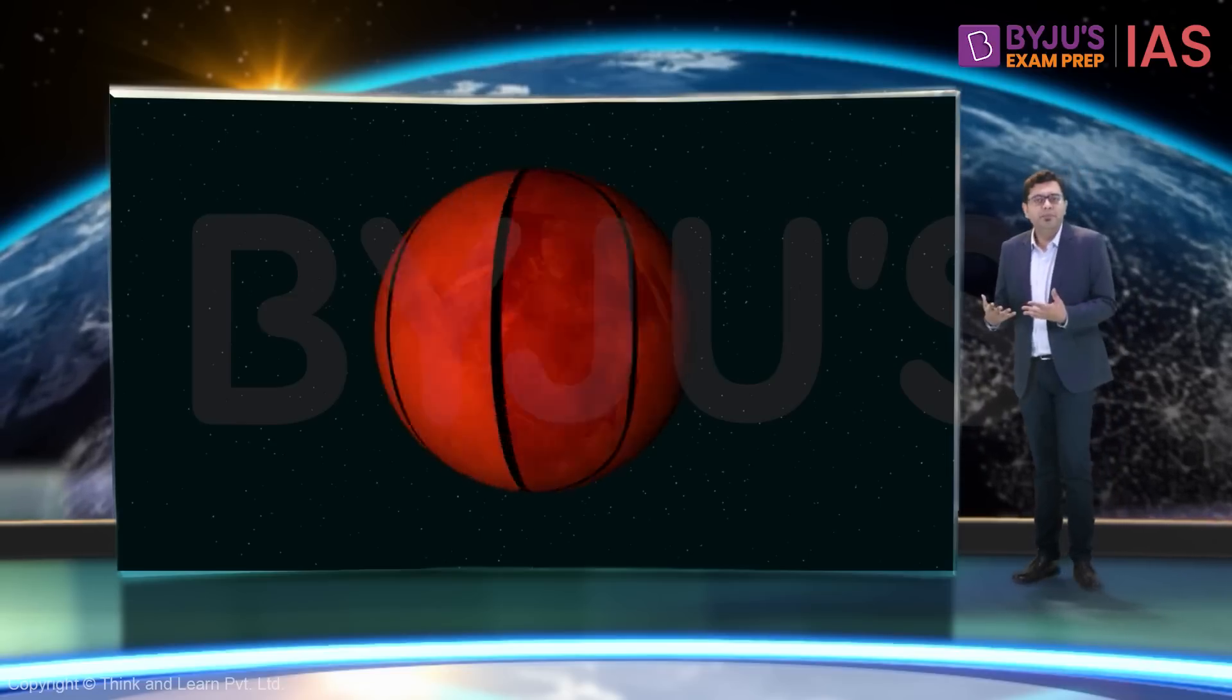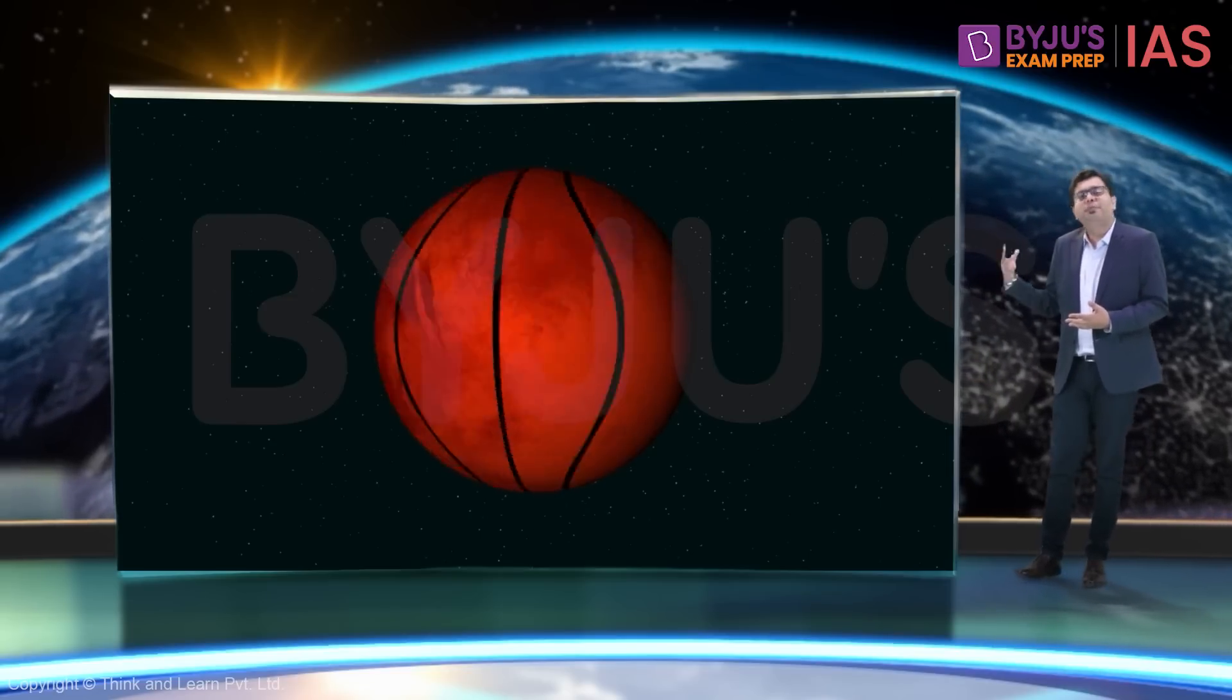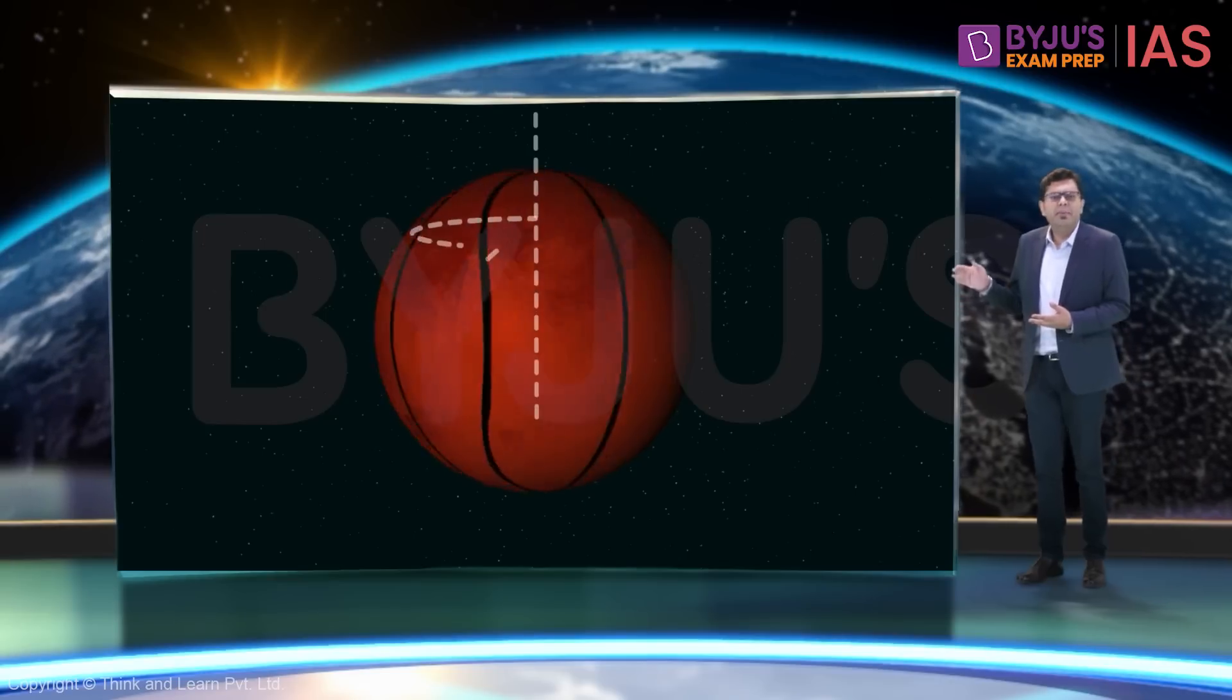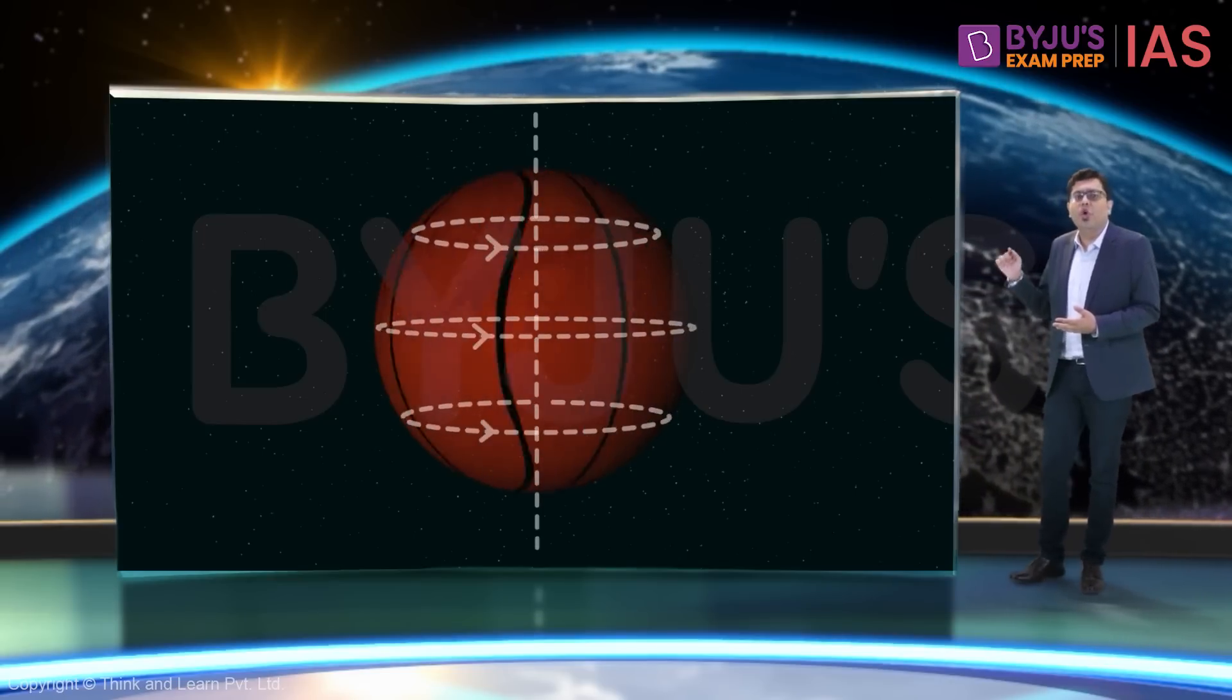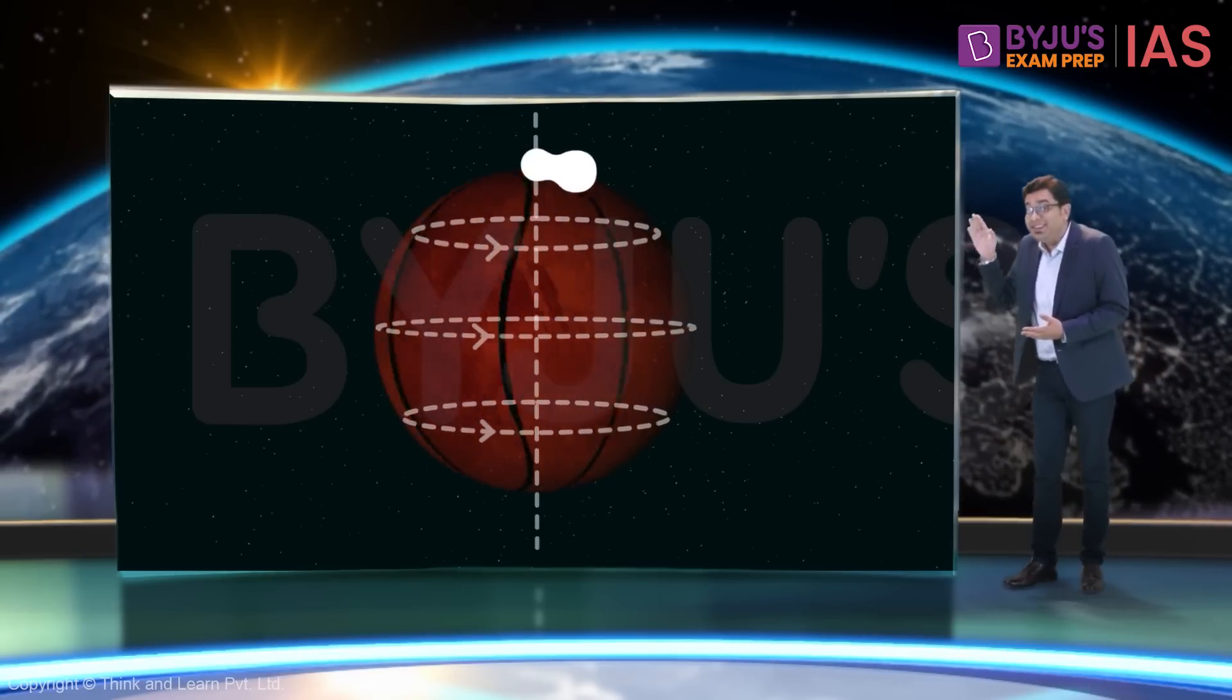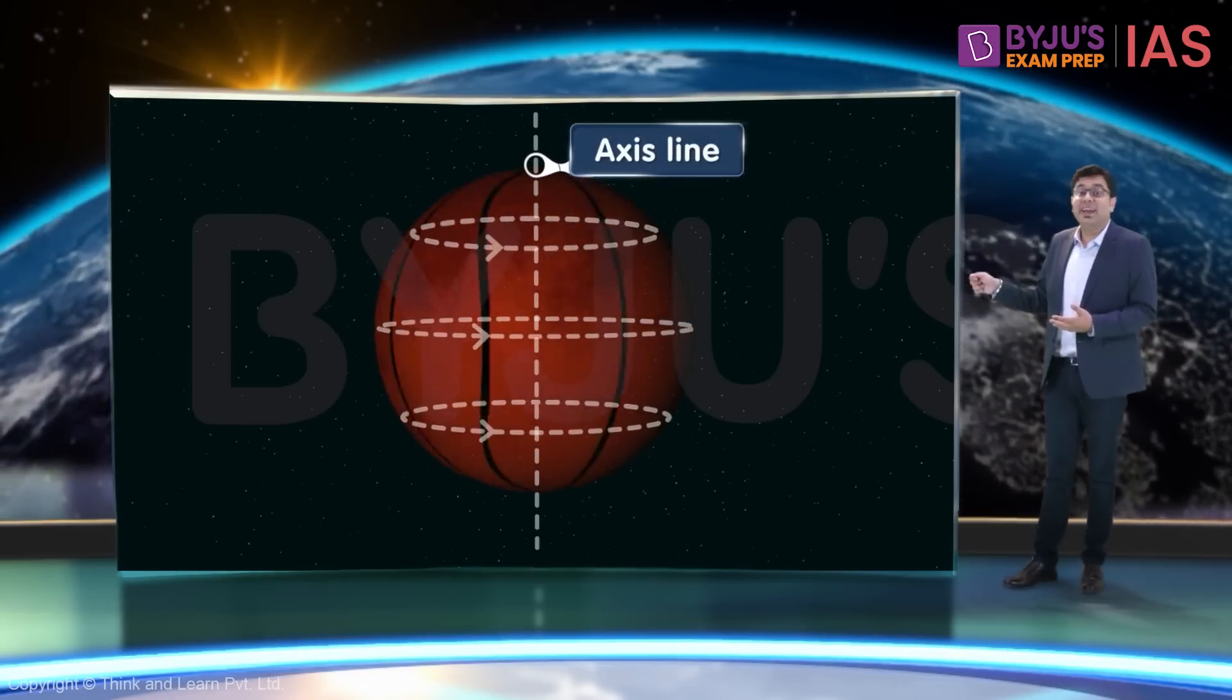For example, take this basketball and spin it. Can you identify its axis? Imagine a line around which all the points on the ball are rotating. This line would be its axis.